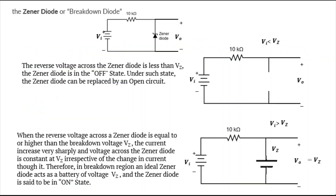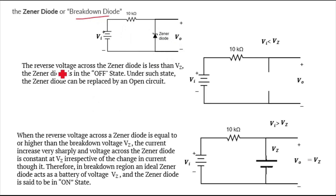First, let's revise the operation of the Zener diode, since it is the key element in our circuit. The Zener diode is also called a breakdown diode. When the applied voltage VI is less than the breakdown voltage VZ, the Zener diode acts as an open circuit.